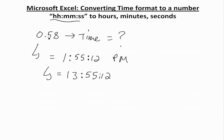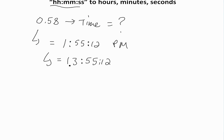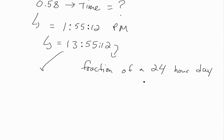So how do we get this? What you need to know with Excel is that when you convert a time value to a number, it gives you a fraction of a 24-hour day. So 13 hours, 55 minutes, and 12 seconds equals 58% of a 24-hour day — that's why it shows as 0.58.